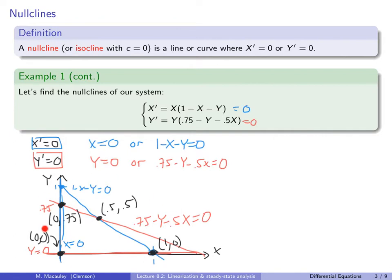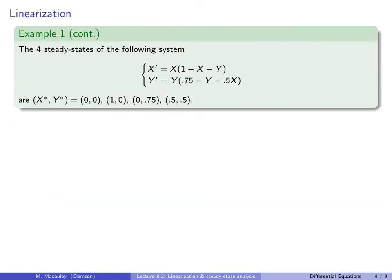We have four mystery steady states in the phase plane. What we'll do is take each steady state and linearize the system — approximating it with a linear system in the neighborhood of each point. Then we'll determine whether each is a saddle, stable node, unstable node, or something else, and piece together the full phase portrait.